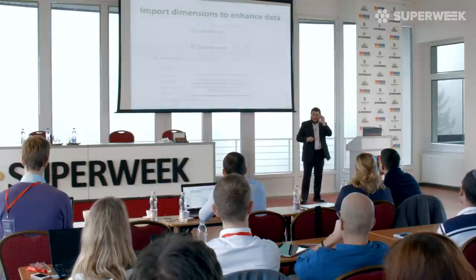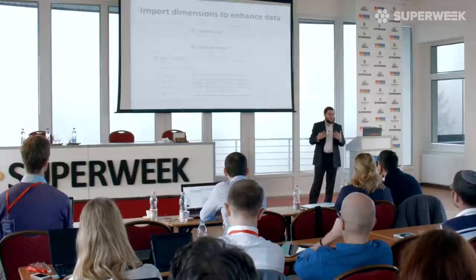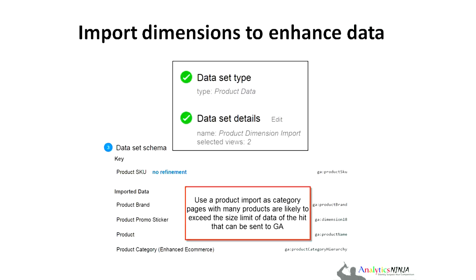There's a new product scope, so you set your data schema to be for products, and that allows you to map to the primary key of the product SKU the additional information about the product. We're doing that here on category pages because Google Analytics has limitations of sending data in a hit to eight kilobytes. If you have a product page showing 60 products with names, product IDs, and lists, the size of the data sent on the page view will be too big and it will fail. One way to work around this is to upload your rich product data — the descriptive dimensions — using the data upload. Here, what I'm mapping to is the product ID, and then I'm getting the product category, its full product taxonomy, brand, and a custom dimension called a promo sticker identifying if it's a new product, on sale, or some label you see on a product on a category page.